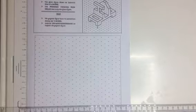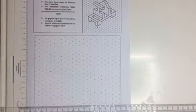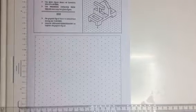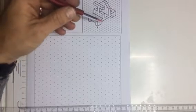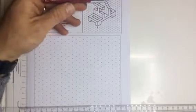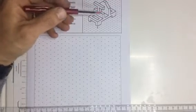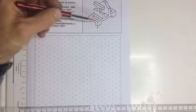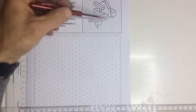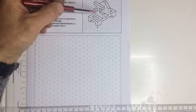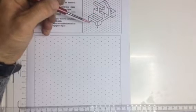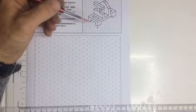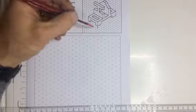To draw an isometric drawing, the first thing is to start out by drawing basically a block of material that would have the three major dimensions of the object that you're going to be drawing. That would be your length, your breadth, and your height.